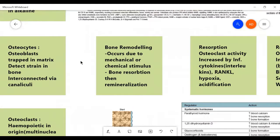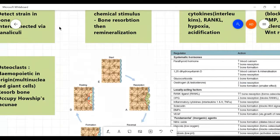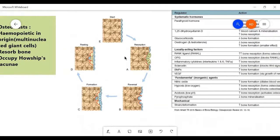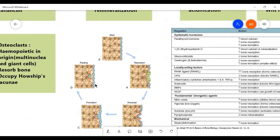Bone remodeling occurs due to mechanical and chemical stimulus. The bone remodels in this process. First, osteoclasts resorb the bone. Then there is a reversal. The osteoblasts come in and then they remineralize the area. Again, regenerating the bone structure.